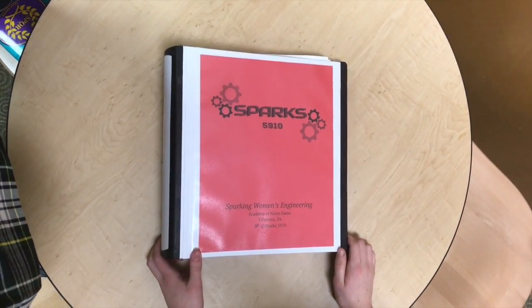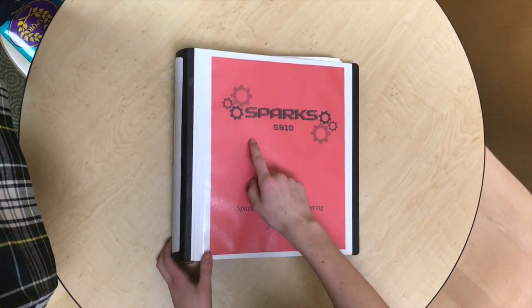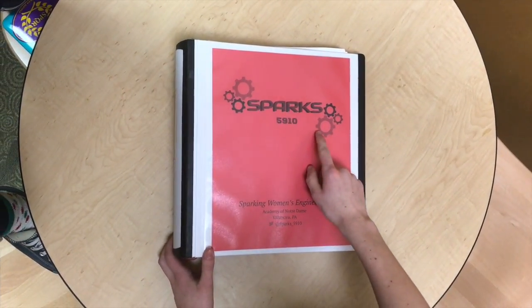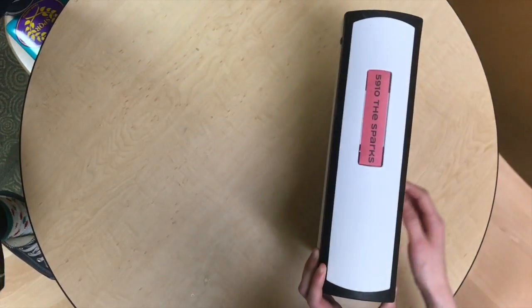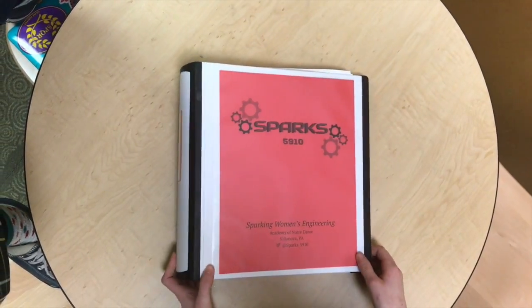Today we're going to talk about the engineering notebook. The first thing you have to remember is to include your team name and number on the front of the notebook. You can also include Facebook, Twitter, and you also need to have the team name and number on the side of the notebook.